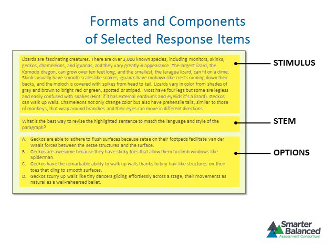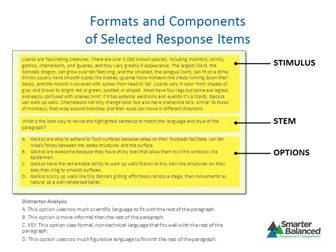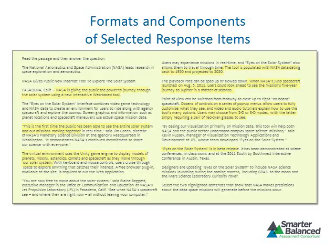Options are possible answers students must select from and should be arranged according to a logical order, such as numerically, alphabetically, or the order in which information is presented in the stimulus. There are four different ways to respond to a traditional item, but only one correct answer. Distractors are incorrect answer options, and the key is the correct answer. The distractor analysis explains why the correct answer is correct.